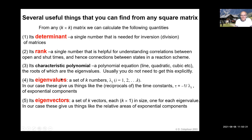You can also find, for any square matrix, the eigenvectors — this is a set of K vectors, each of which is K by one, a column vector. There is one eigenvector for each eigenvalue. They're useful for finding the relative areas of exponential components, for example.